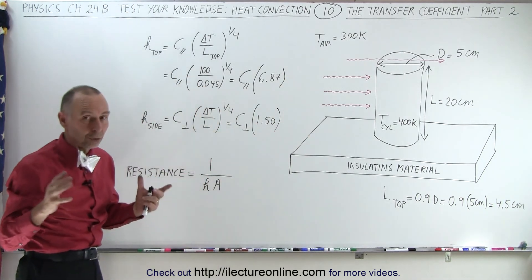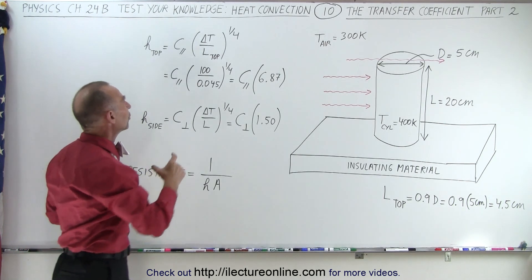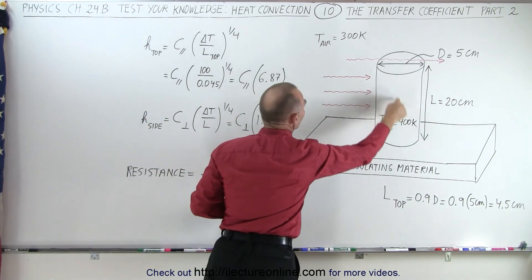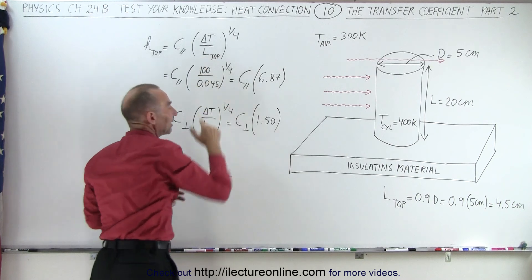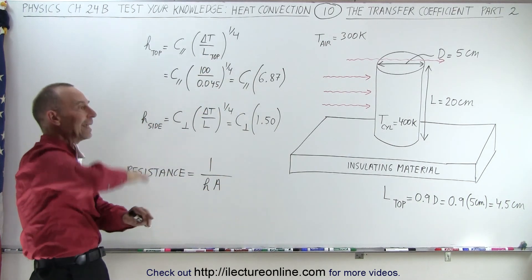So these will be different coefficients, and we'll learn later in later videos how to calculate those. And then notice that we have the ratio of the difference in the temperature between the cylinder and air, and we have to divide that by the length over which the air travels or the length against which the air travels.